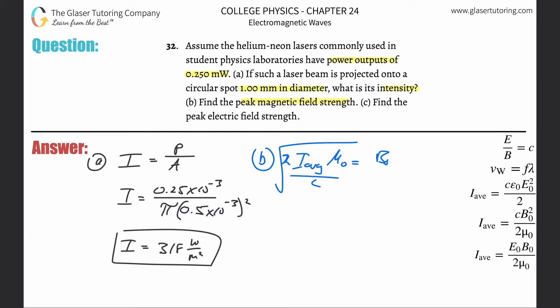And there's a division there, right? So the maximal magnetic field strength here is going to be the square root of two times this 318 average intensity that we found multiplied by four pi times 10 to the minus seventh. That's a constant divided by the speed of light, which is also another constant.